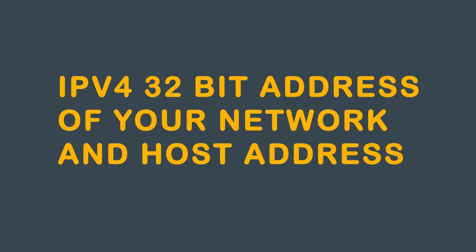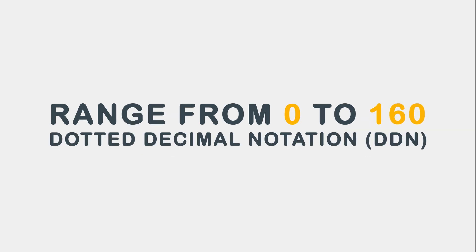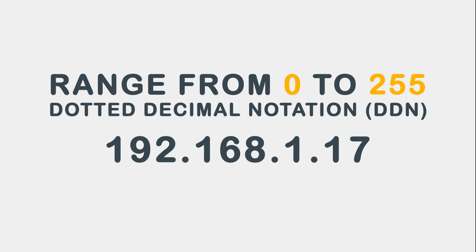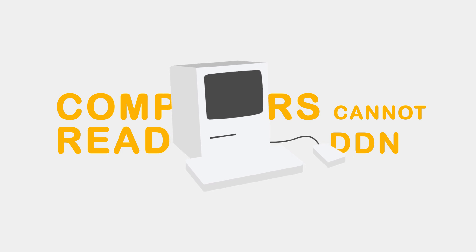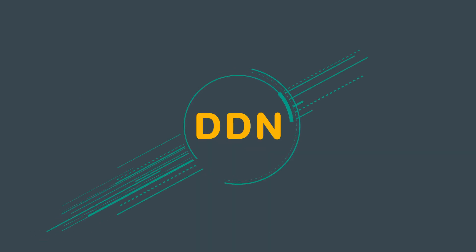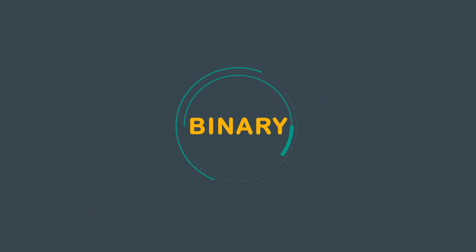IPv4 is a 32-bit address of your network and host address. It is made up of four octets separated by periods. Each octet has a range from 0 to 255 when written down in dotted decimal notation, or DDN, as in 192.168.1.17. However, computers cannot read dotted decimal notation — they can only read two states called binary. This section will show you how to take dotted decimal notation, or DDN, to binary format.